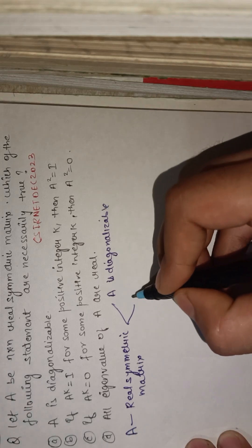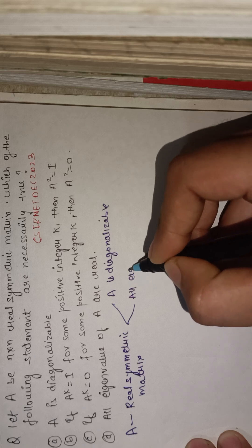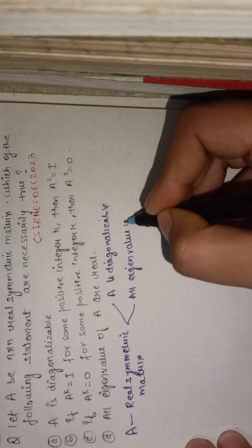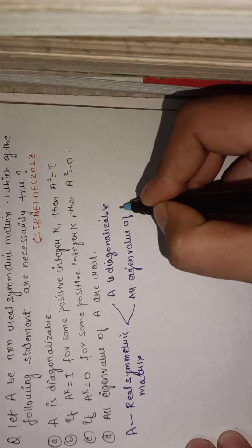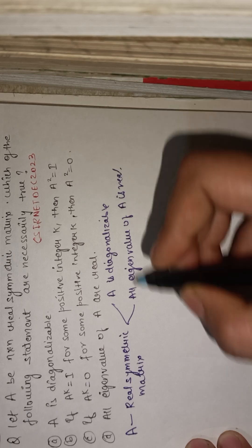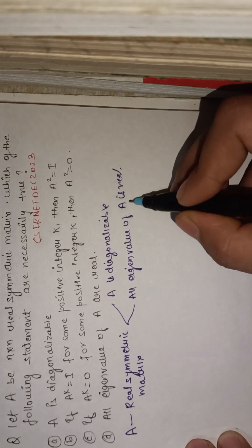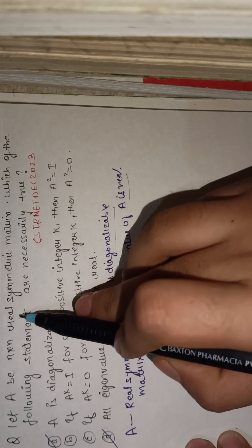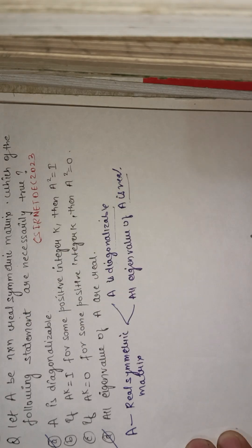Second: all eigenvalues of A are always real. If the matrix is real and symmetric then all eigenvalues are real and it is always diagonalizable. So options A and D are true by the theorem of real symmetric matrices.